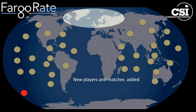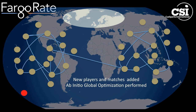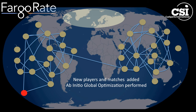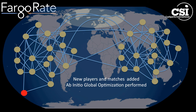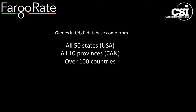Imagine new players and new games and matches amongst existing players from leagues and tournaments being added to the worldwide database every day. And imagine a massive cloud-based computation starting completely from scratch — considering all players and all match-ups, which we call ab initio global optimization — being performed every day. Our database of about 1.3 million games is growing rapidly, and it already includes players and games from all 50 states, from all 10 provinces of Canada, and from over 100 countries.